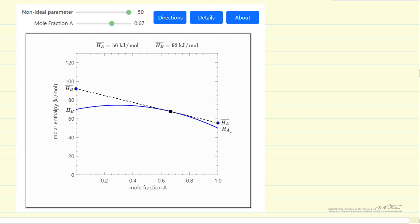The notation is that HA is the pure component enthalpy per mole, HA bar is the partial molar enthalpy of component A in the mixture at this mole fraction of A, and then correspondingly for B, pure component enthalpy and partial molar quantity.